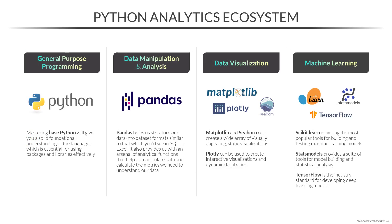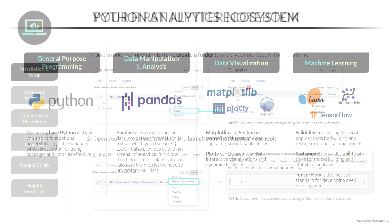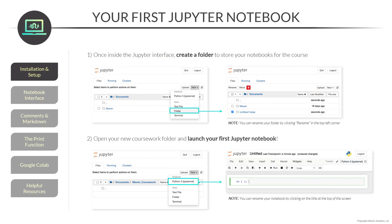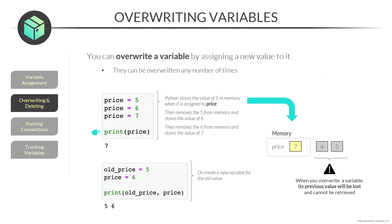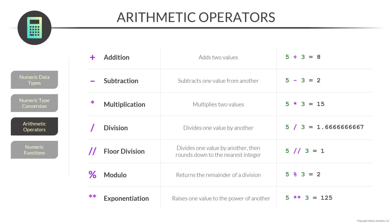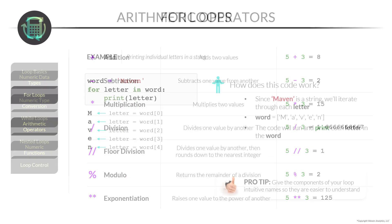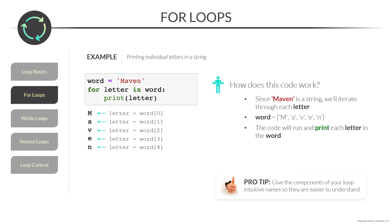We'll start by introducing the Python language and ecosystem, installing Jupyter Notebooks where we'll write our first lines of code, and reviewing some key data types and properties. From there, we'll dive into foundational tools like variables, numeric and string operators, conditional logic, loops, functions, and more.